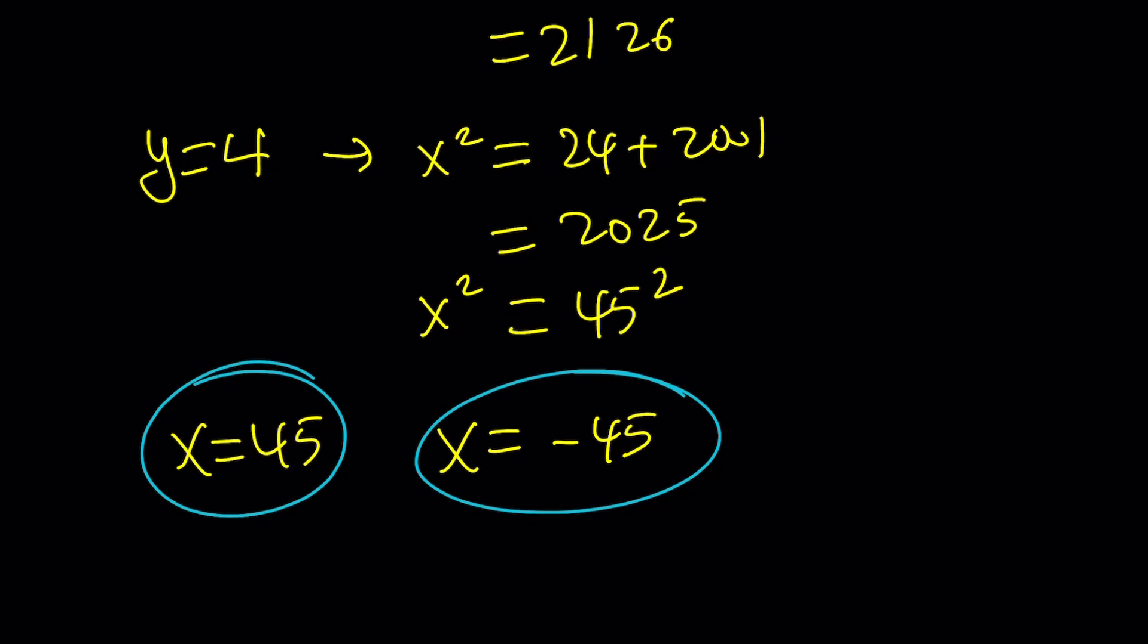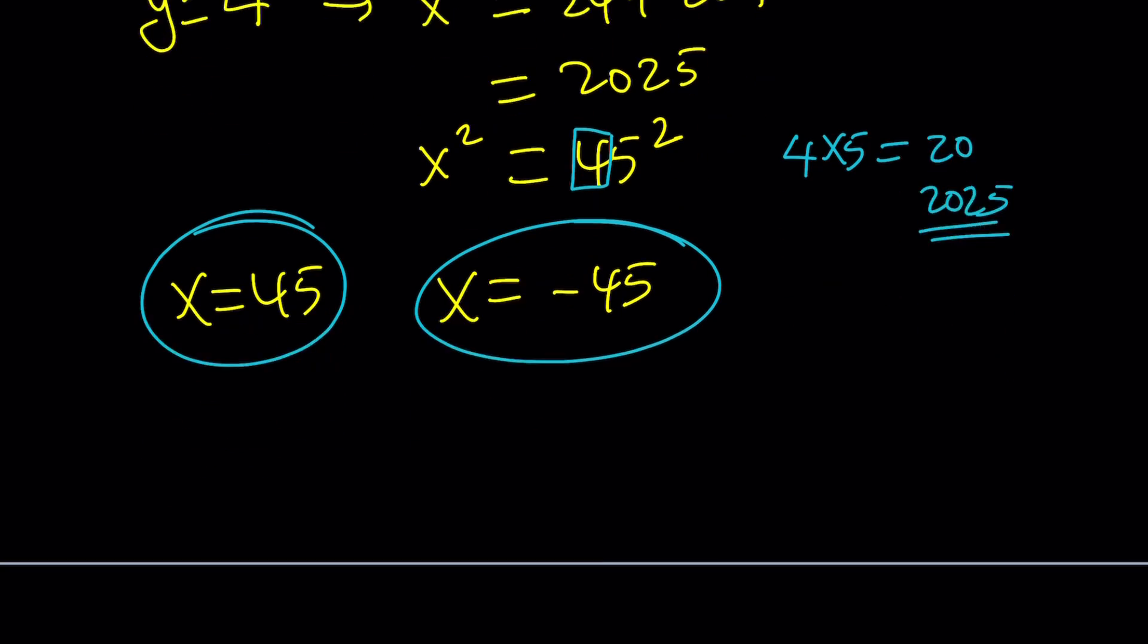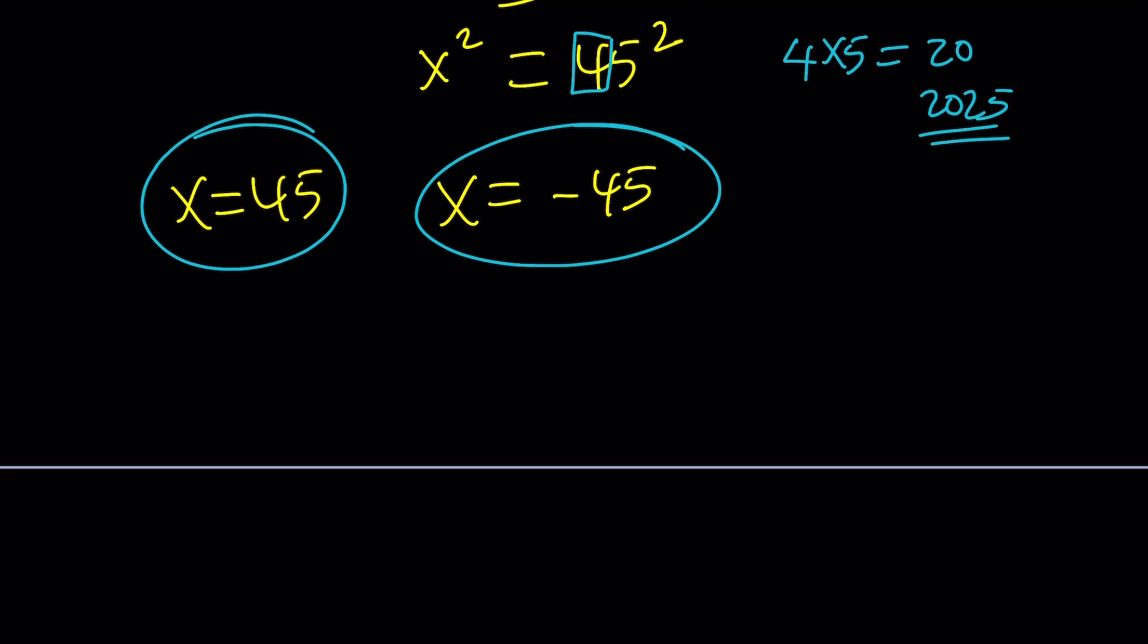How did I know quickly that 2025 is 45²? Because there is a shortcut. If you have a two or more digit number ending in 5, take the tens digit, in this case that's 4. What is 1 more than 4? That's 5. 4 times 5 is 20. Just attach a 25 and you'll get the square. That applies to all numbers that end in 5.